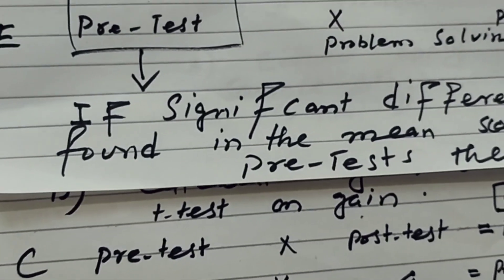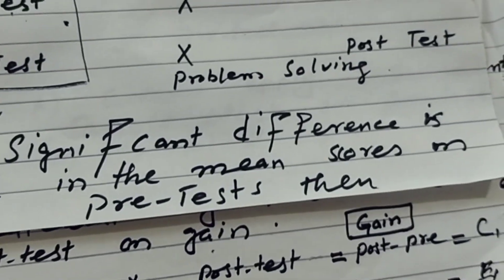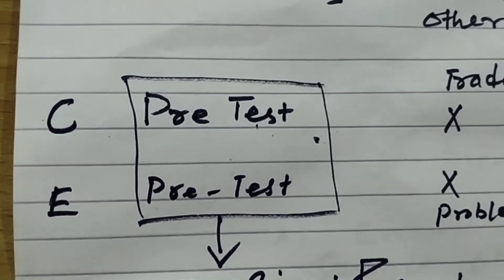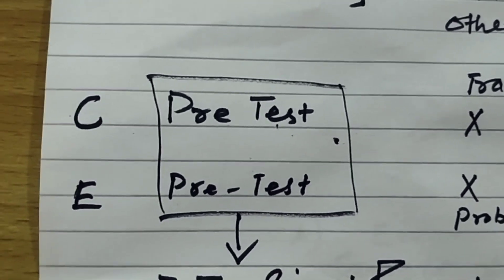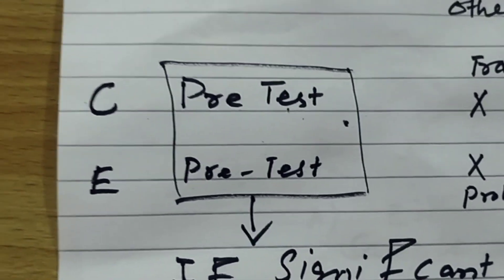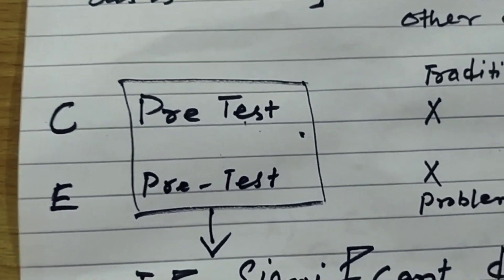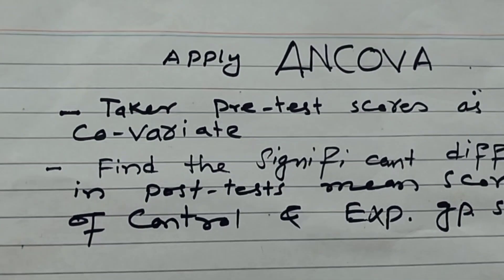Now the question is: what if a significant difference is found in the mean scores on the pre-test? If we apply an independent sample t-test on the pre-test scores and find that there is a significant difference in the mean scores, then we have a technique called ANCOVA, and we apply ANCOVA.